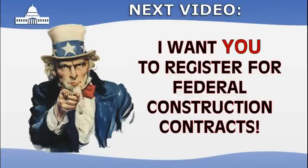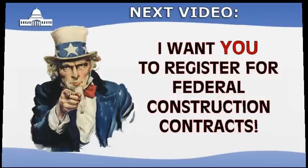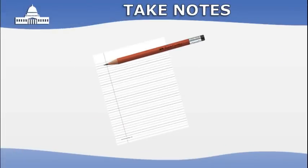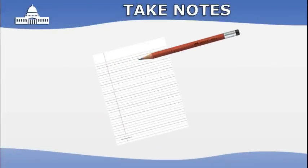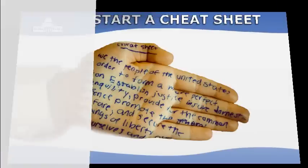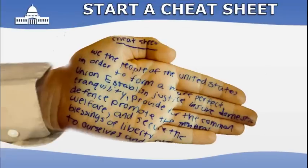I'm going to lay out a step-by-step plan for you, so you might want to take notes on a piece of paper. At the top of another piece of paper, start a cheat sheet — something to keep track of all your ID numbers, names, addresses, phone numbers, and login info for the various websites and forms you'll be filling out.